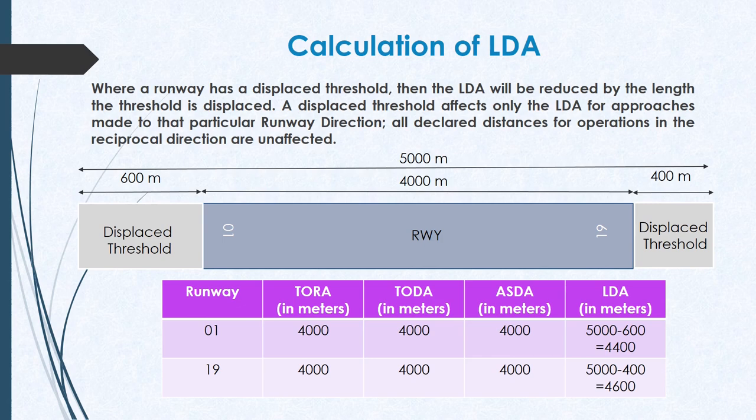Now let us calculate the landing distance available, or LDA, when the runway has a displaced threshold. When the threshold is no longer located at the extremity of the runway and is displaced by a certain length, the LDA will be reduced by that length. An important point: a displaced threshold affects only the LDA for approaches made to that particular runway direction. All other declared distances for operations in the reciprocal direction are unaffected.